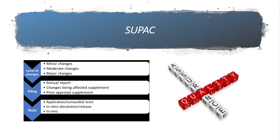Through the SUPAC guidelines it is clear that all changes desired by the manufacturer must be categorized. Changes include: change in formulation or excipients, change in the site of manufacturing, change in skilled manpower, change in batch size, or change in preservatives. Once the change is identified, the manufacturer must assess how it will impact the formulation's quality and performance, determine the level — minor Level 1, moderate Level 2, or major Level 3 — and file accordingly through annual reports, supplements, or prior approval requests.